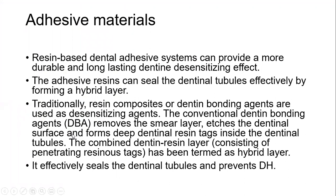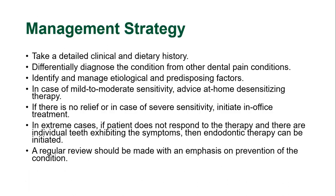Resin-based dental adhesive systems can provide a more durable and long-lasting dentin desensitizing effect. The adhesive resin seals the dentinal tubules effectively by forming a hybrid layer. The conventional dentin bonding agent removes the smear layer, etches the dentin surface, and forms deep dentinal resin tags inside the dentinal tubules. This combined dentin-resin layer, consisting of penetrating resinous tags, is termed the hybrid layer, and it effectively seals the dentinal tubules to prevent dentinal hypersensitivity.